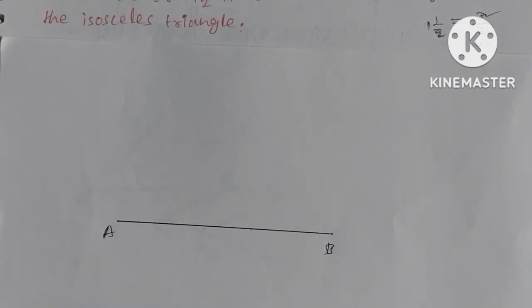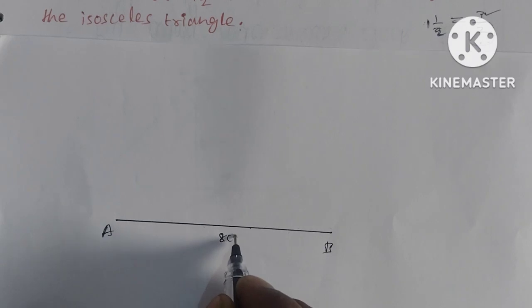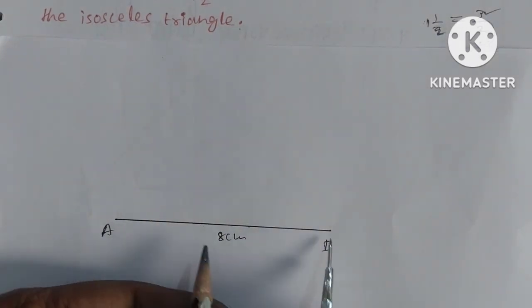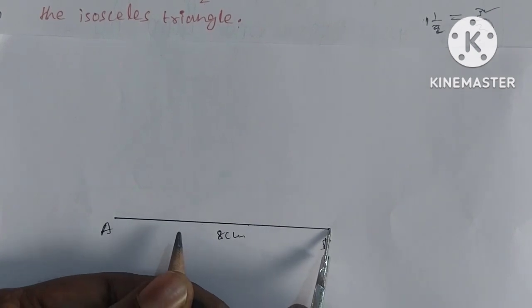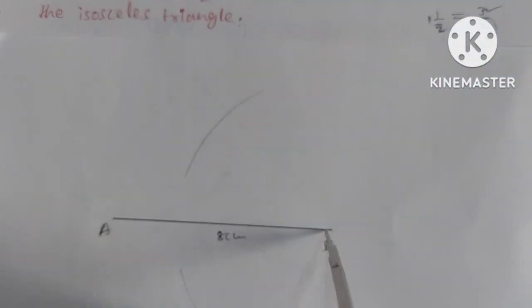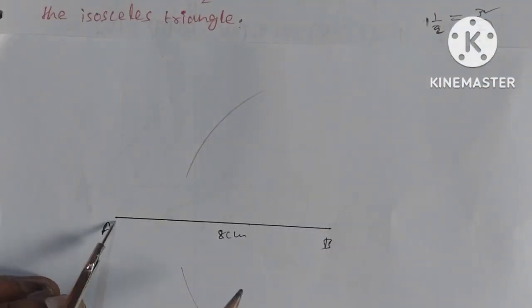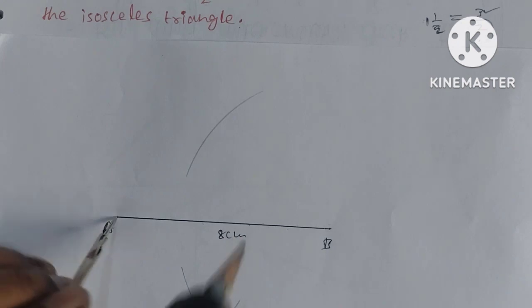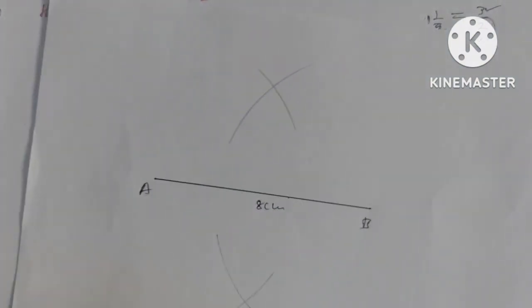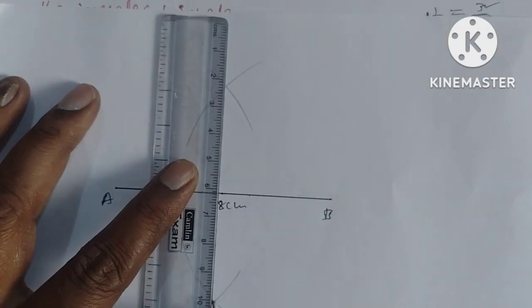This is the altitude or height. To bisect the base, we take more than half from both ends and draw arcs to create the perpendicular bisector.